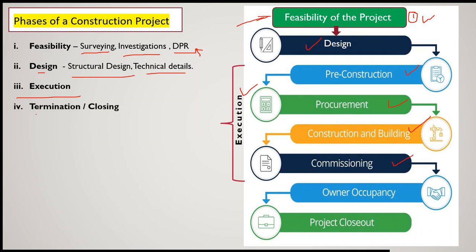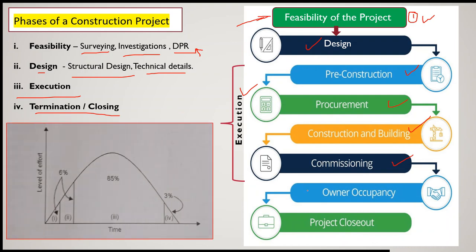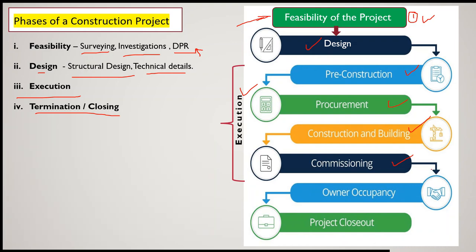The fourth phase is termination or closing. After commissioning, the project may already be sold or on sale, and owners who have purchased the residential accommodations will occupy them, and ultimately the project will be closed. So the four phases are: first feasibility, second design, third execution, and fourth closing.